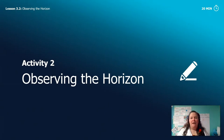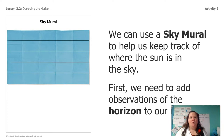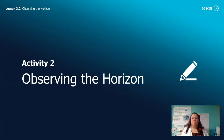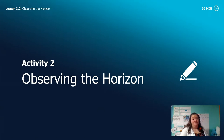Now that we've had a little practice using the horizon to talk about where the sun is, let's do some more observing of the horizon. We're going to create a sky mural to help us keep track of where the sun is in the sky. First, though, we need to add the horizon to our mural, so I want you guys to make some observations of the horizon where you are.